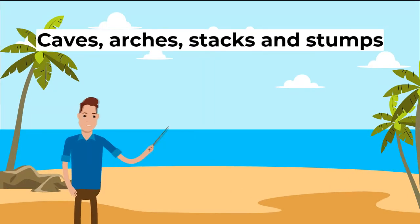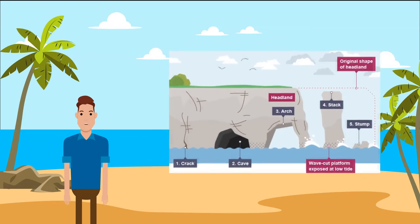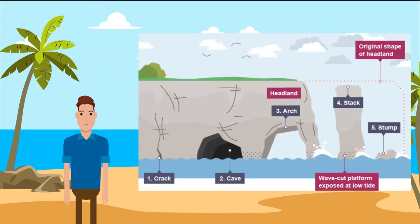Next: caves, arches, stacks and stumps. Erosion can create these features along a headland. Firstly, cracks in the rock erode through abrasion. Secondly, caves occur when waves force their way into cracks in the cliff face — the water contains sand and other materials that grind away at the rock until the cracks become a cave; hydraulic action and abrasion are the predominant processes. Thirdly, if the cave is formed in a headland, it may eventually break through to the other side forming an arch. Fourthly, the arch continues to be eroded through attrition and gradually becomes bigger until it can no longer support its top — when the arch collapses, it leaves a headland on one side and a stack, a tall column of rock, on the other. Fifthly, the stack will be attacked at the base in the same way a wave-cut notch is formed, weakening the structure until it eventually collapses to form a stump.